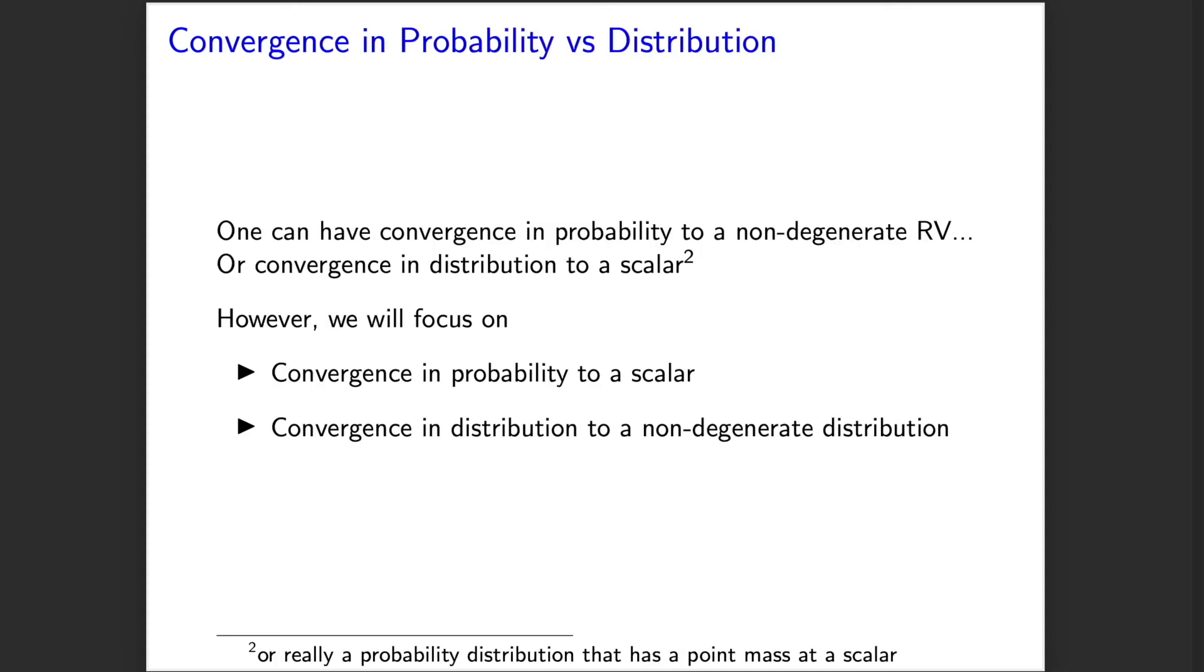So we just looked at convergence in distribution, and again, before we had looked at convergence in probability. Primarily when we think about convergence in probability in this discussion of asymptotic statistics, we're going to be thinking about convergence in probability to a constant. When we think about convergence in distribution, we're going to be thinking about convergence in distribution to a non-degenerate distribution, and that means a distribution that is not just a constant, that doesn't just have mass at a single point.